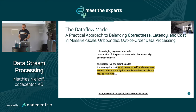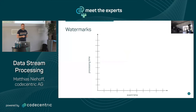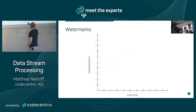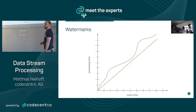The first thing the Dataflow model introduces is watermarks — basically the idea of when I'm going to calculate the result of a window. We have event time and processing time. In the ideal world, every event time maps one-to-one to processing time. In real life this graph shows a wave — event time 1 has processing time of 1.5, event time 4 might already be 5 or 6 seconds elapsed.